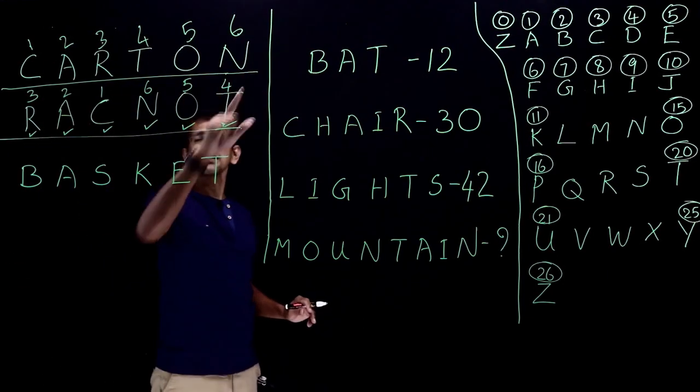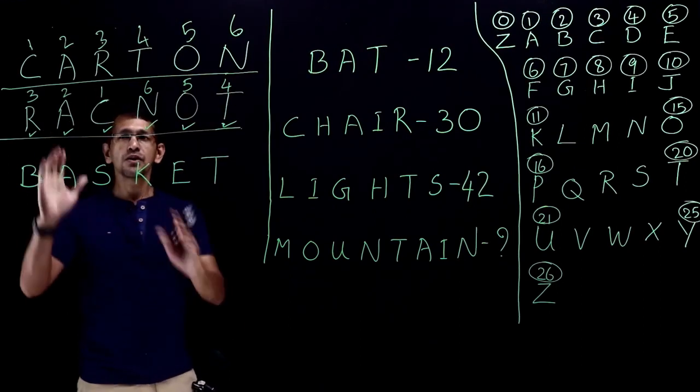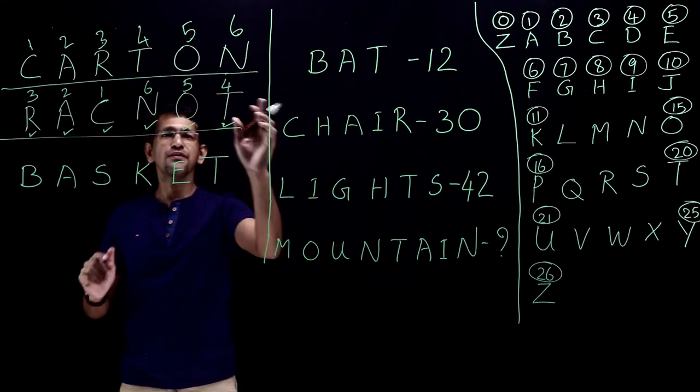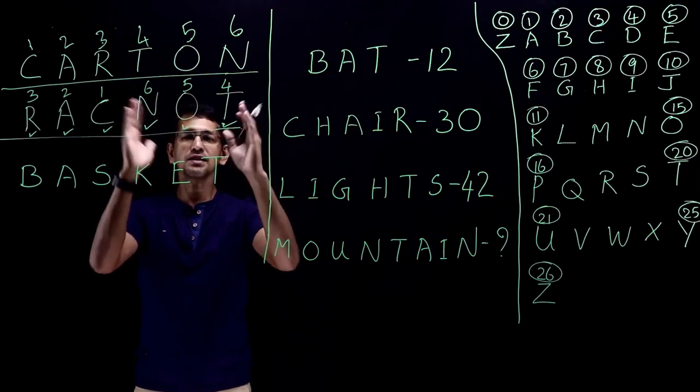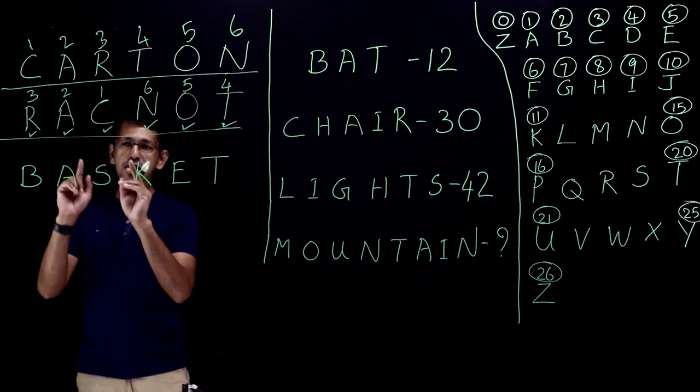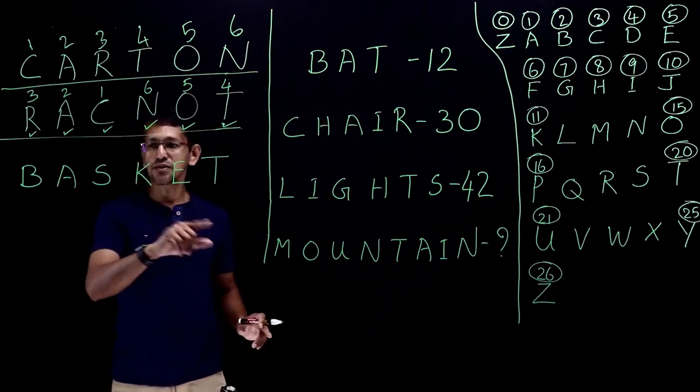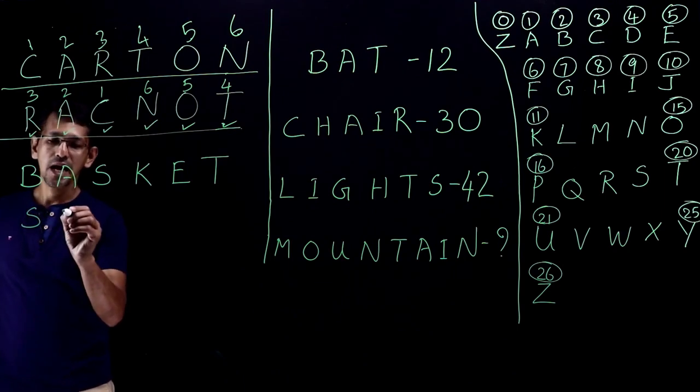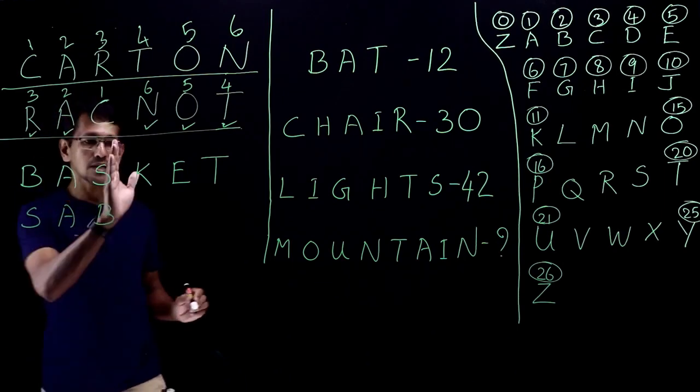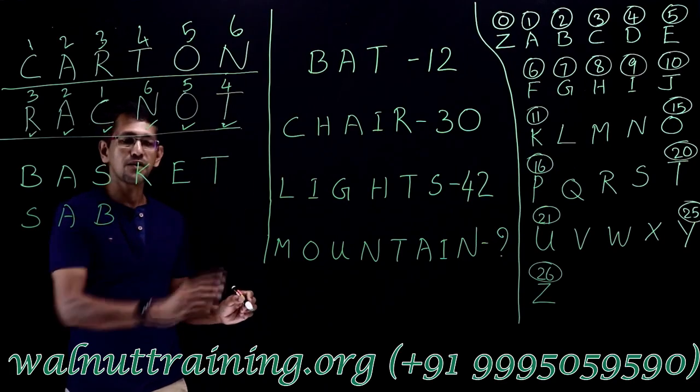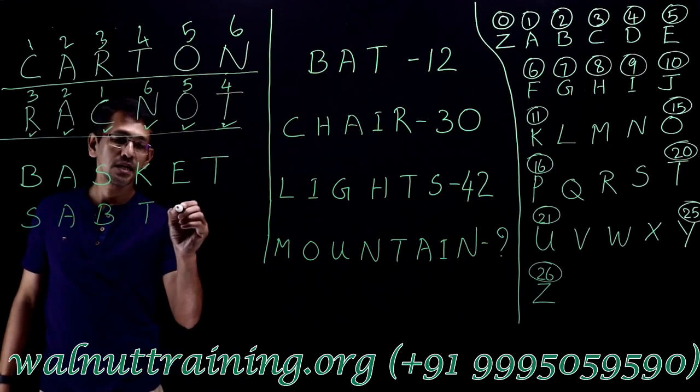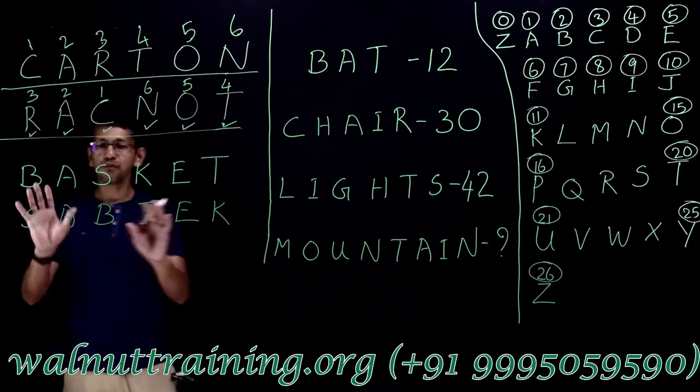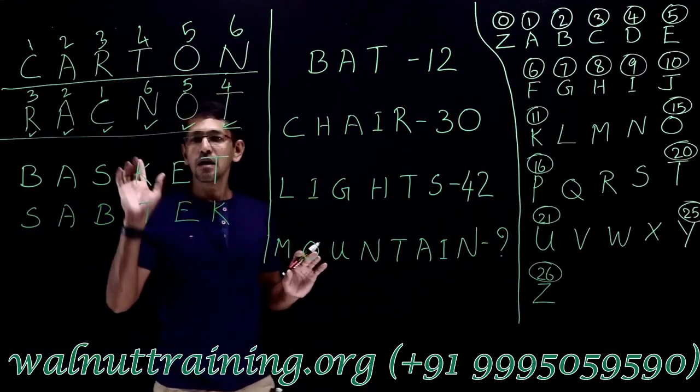So ultimately, 1, 2, 3, 5, 6 is called as 3, 2, 1. The first half of three letters reversed. And 6, 5, 4, the second half of three letters reversed. So we will do the same pattern for basket. So first three letters reversed: S, A, B. And the second set of three letters reversed: T, E, K. Done. So that would be the answer for this question.